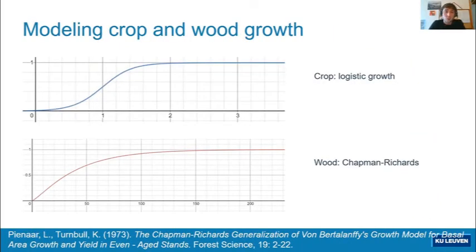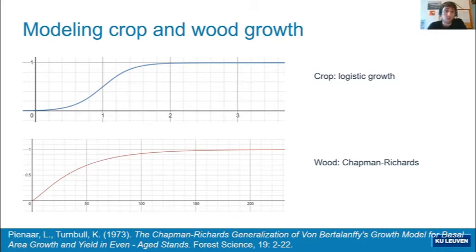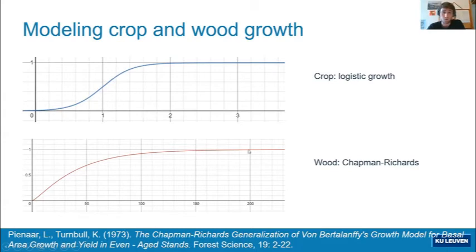These resource layers are the base layers of our model and provide the background for our resource exploitation strategies. We also implemented models for the regrowth and regeneration of resources. Briefly, we introduced the logistic growth model for crop regeneration and the Chapman-Richards equation to model forest growth, which states that the full regeneration of a mature forest takes between 150 and 200 years.